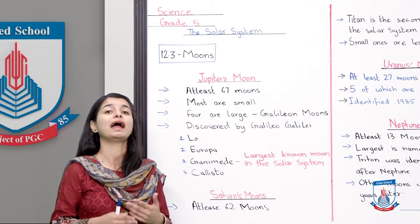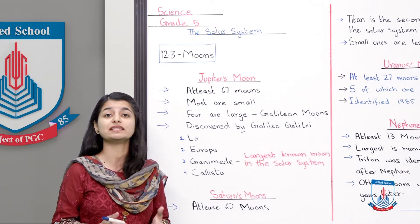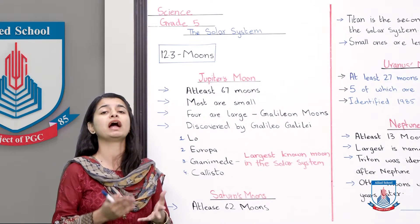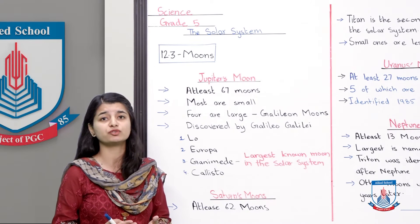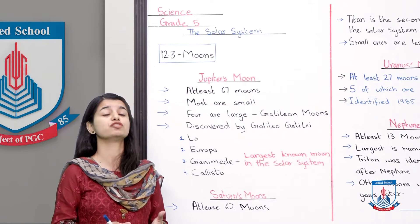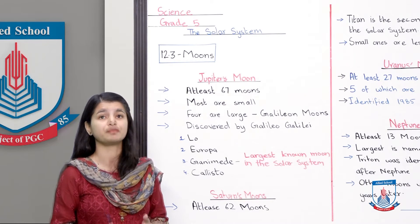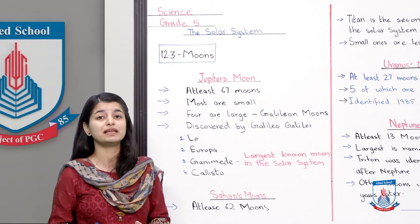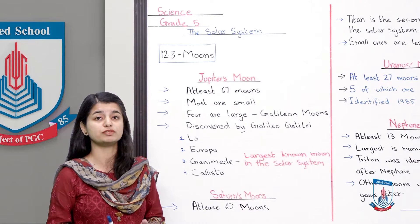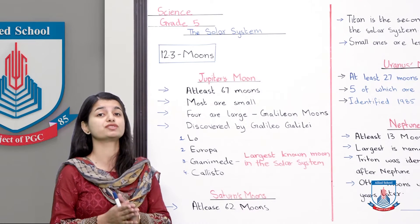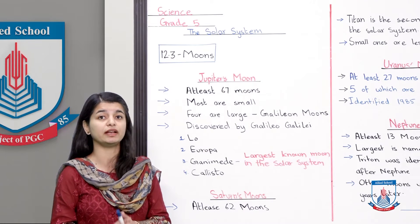Scientists have identified 67 moons with the help of the Hubble telescope and different telescopes. Lekin ye possible hai ki isse kaafi zyadha number mein aur bhi moons hain jo abhi tak scientists ko nazar nahi aayi.